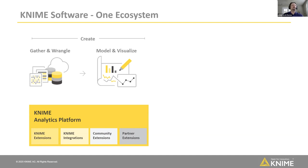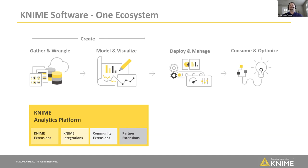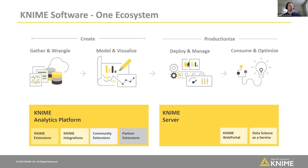The KNIME analytics platform is free to download — it's open source software, so anybody can just go to our website, download and try it out. A question we often get is: how do you make any money and keep the lights on? That's where we have a complementary piece of software called the KNIME server. This is what we sell to enterprise customers. It helps you deploy and manage different workflows across your data science team and get things up and running at a production level. There's also a web portal and options for data science as a service.